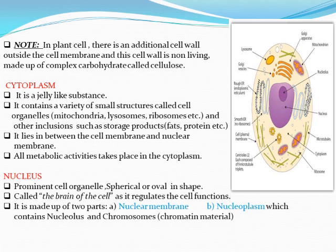Cellulose is a complex carbohydrate. Carbohydrate: when many molecules of glucose attach together, they form a carbohydrate called cellulose. So it is a very complex carbohydrate.